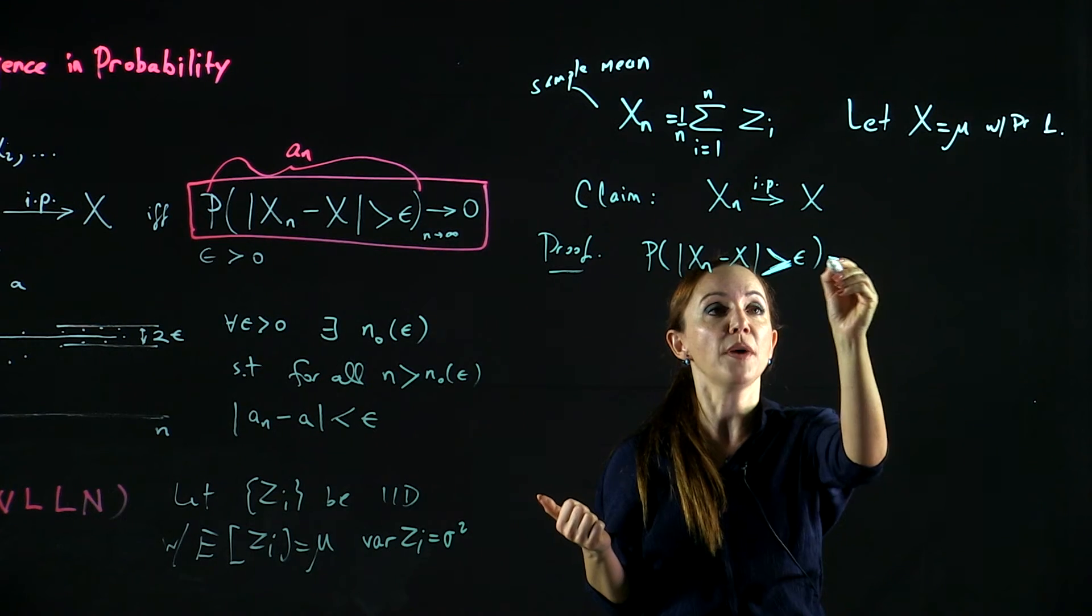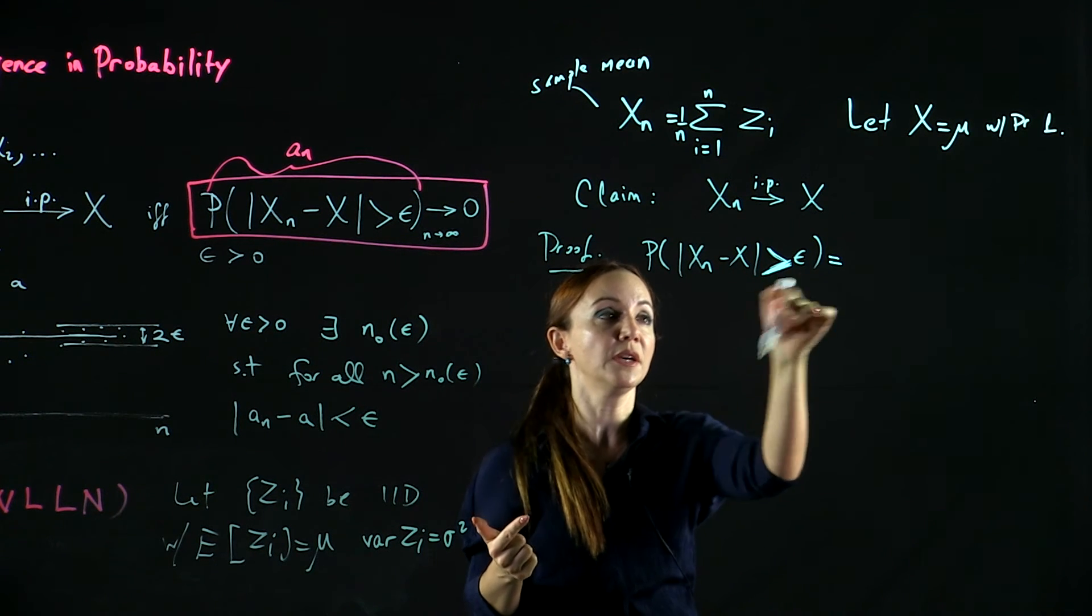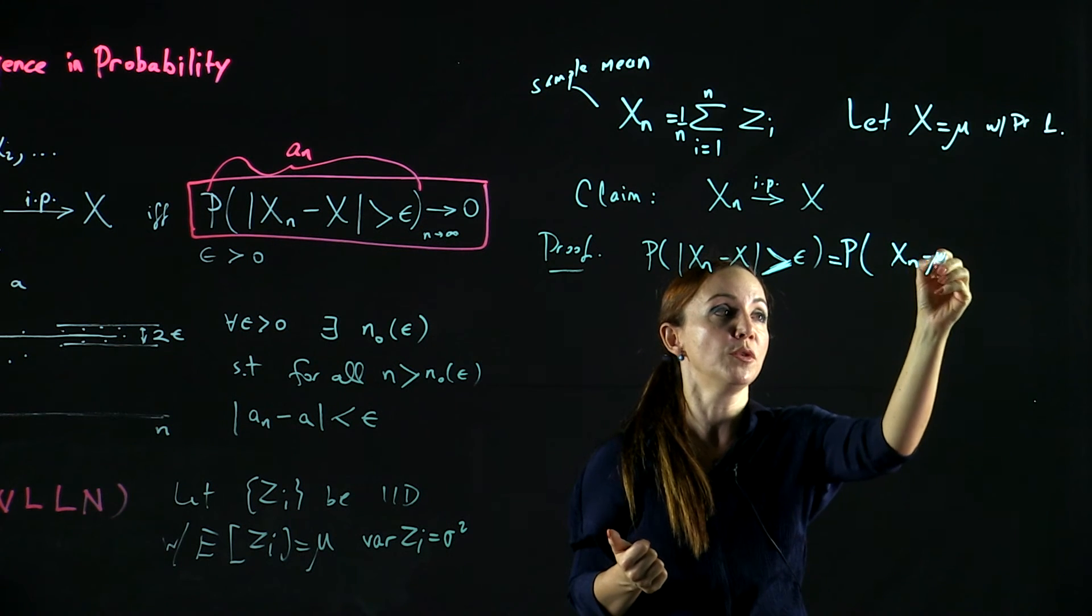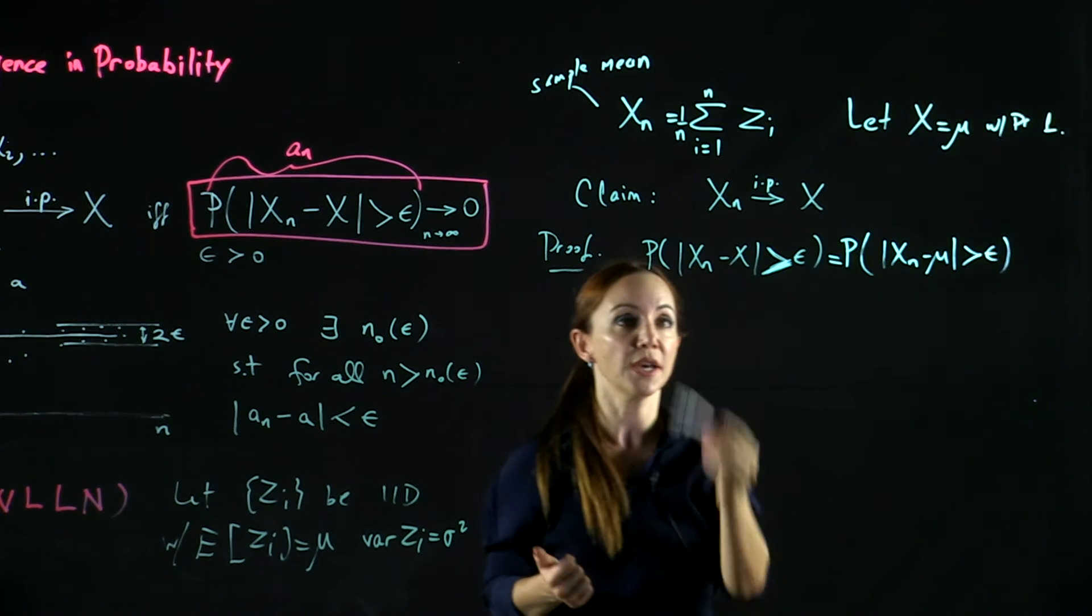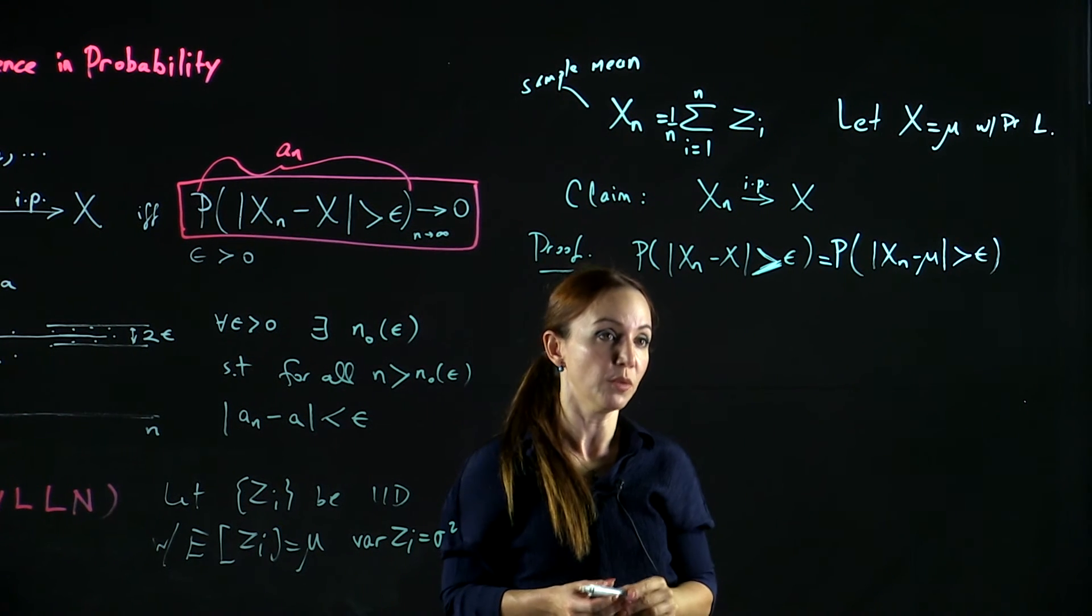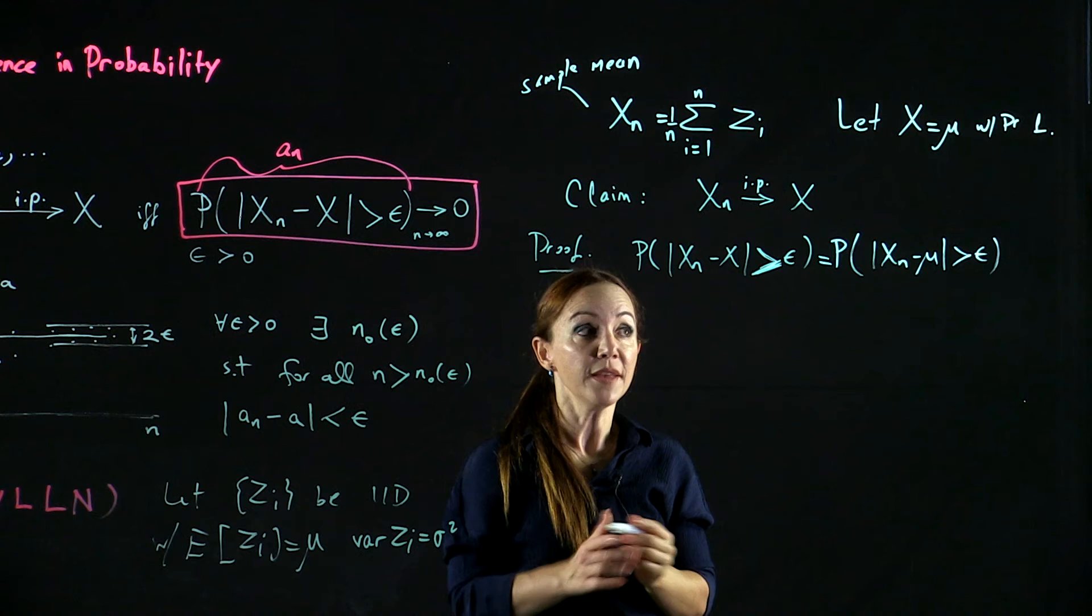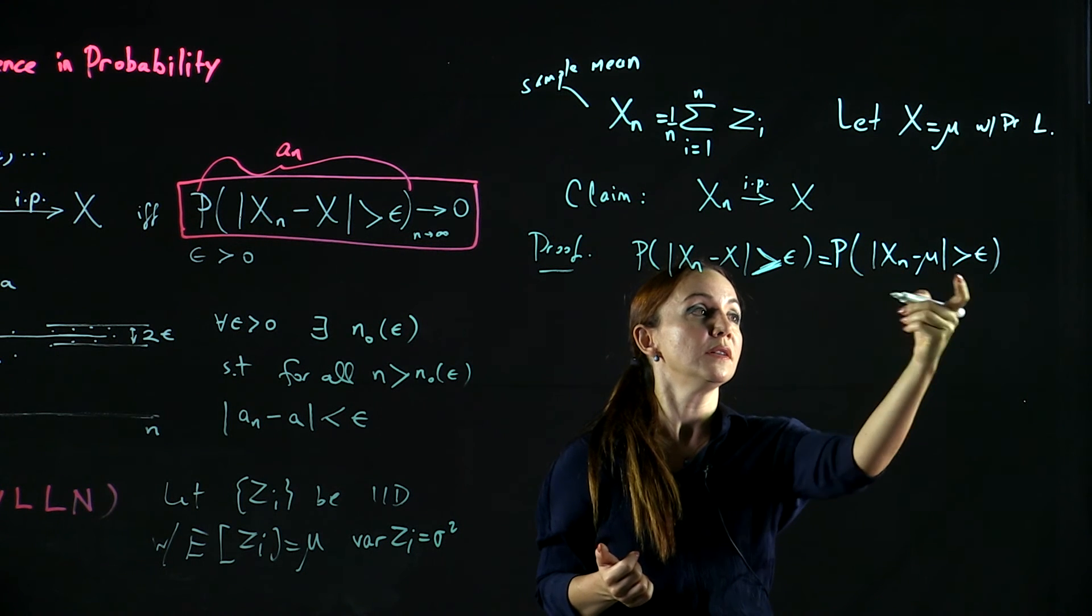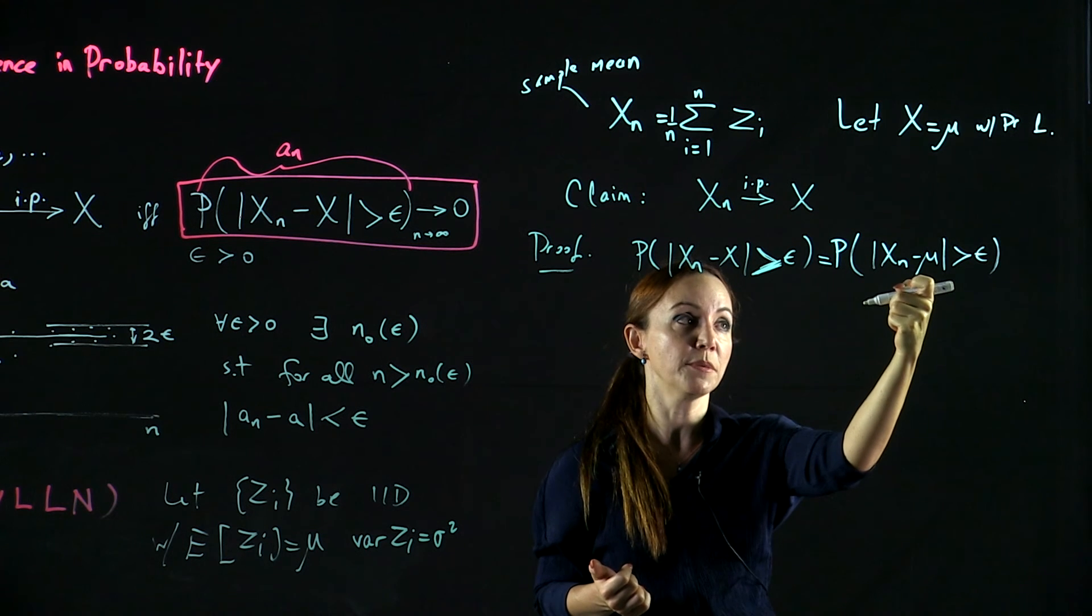We can start by noticing that this probability is equal to the probability that XN minus mu is bigger than epsilon, because X is equal to mu with probability 1.